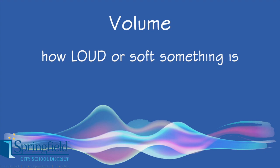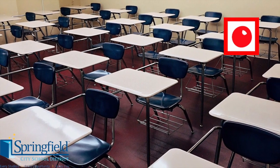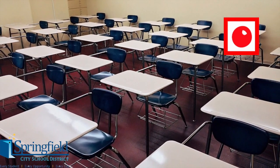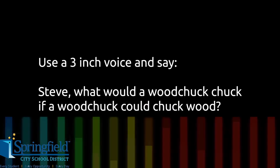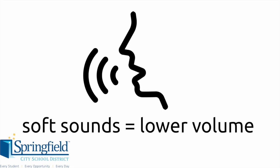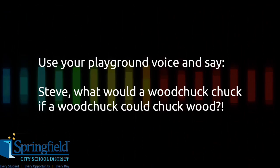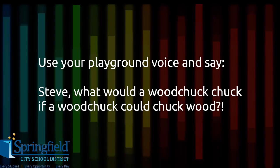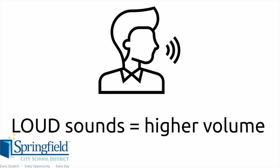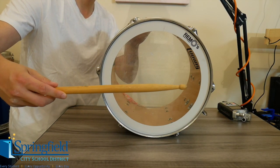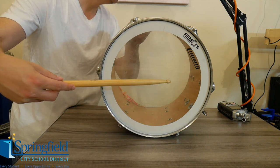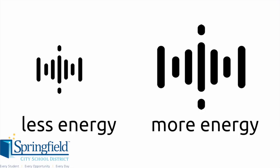This is what we call volume — how loud or soft a sound is. Think about talking to your friends in class using a three-inch voice: 'Steve, what would a woodchuck chuck if a woodchuck could chuck wood?' That would be using a soft voice. However, think about saying that to your friend on the other side of the playground. Notice how much more energy you had to use? Just like hitting the drum harder — the more energy being used, the louder the sound will be. The less energy being used means softer sounds and softer air waves.